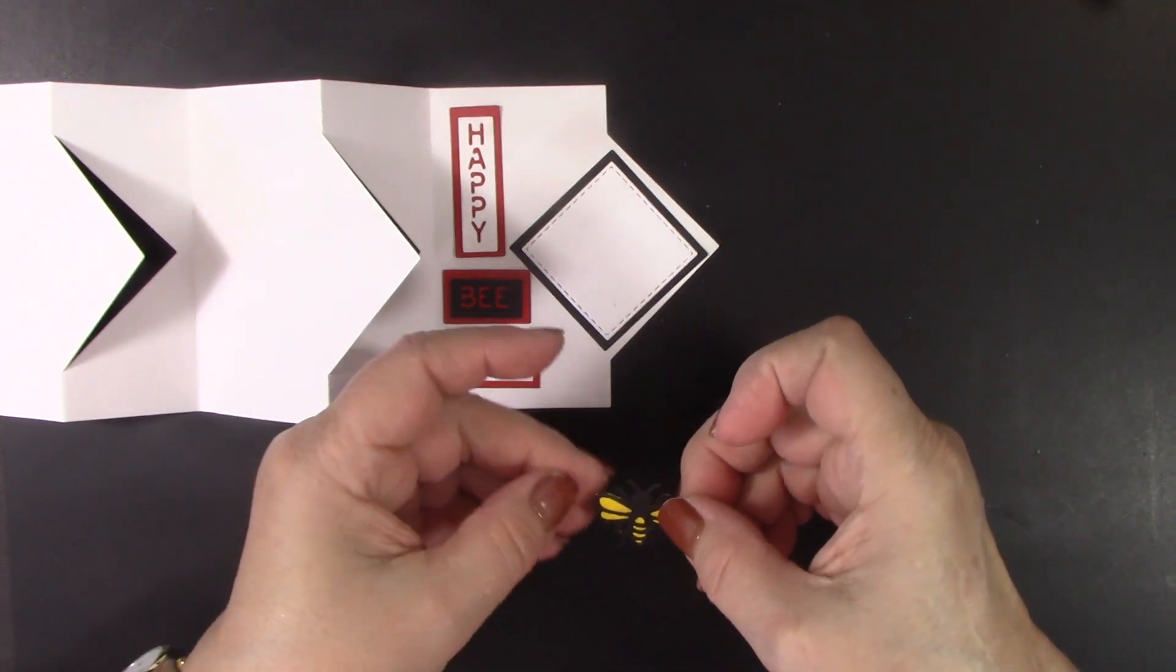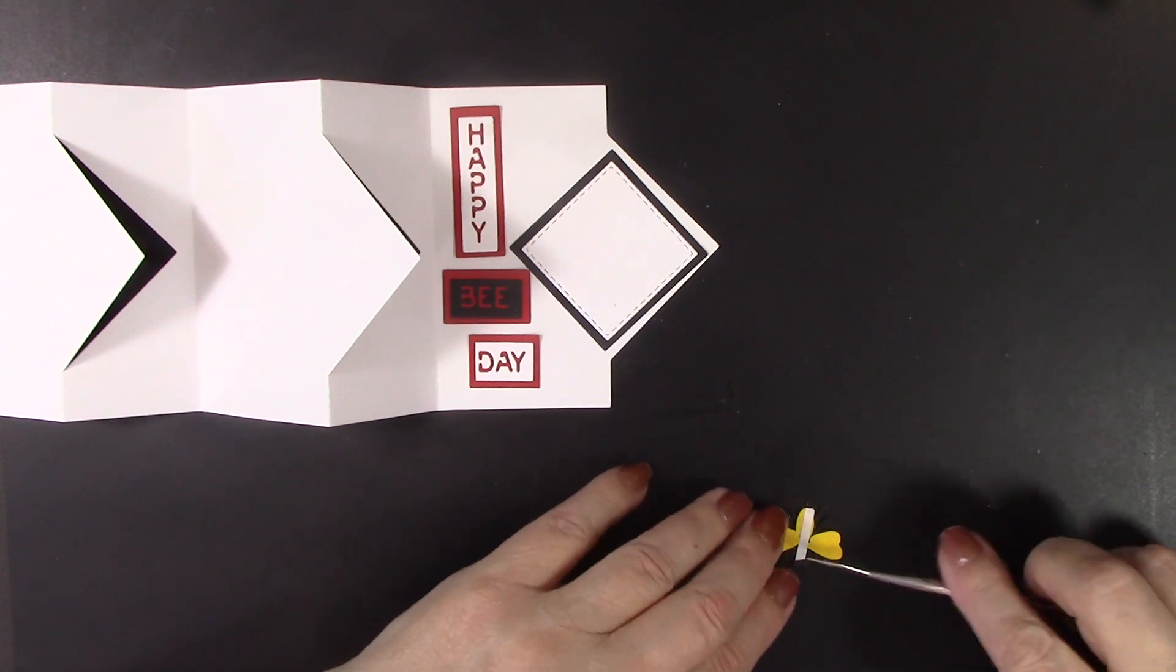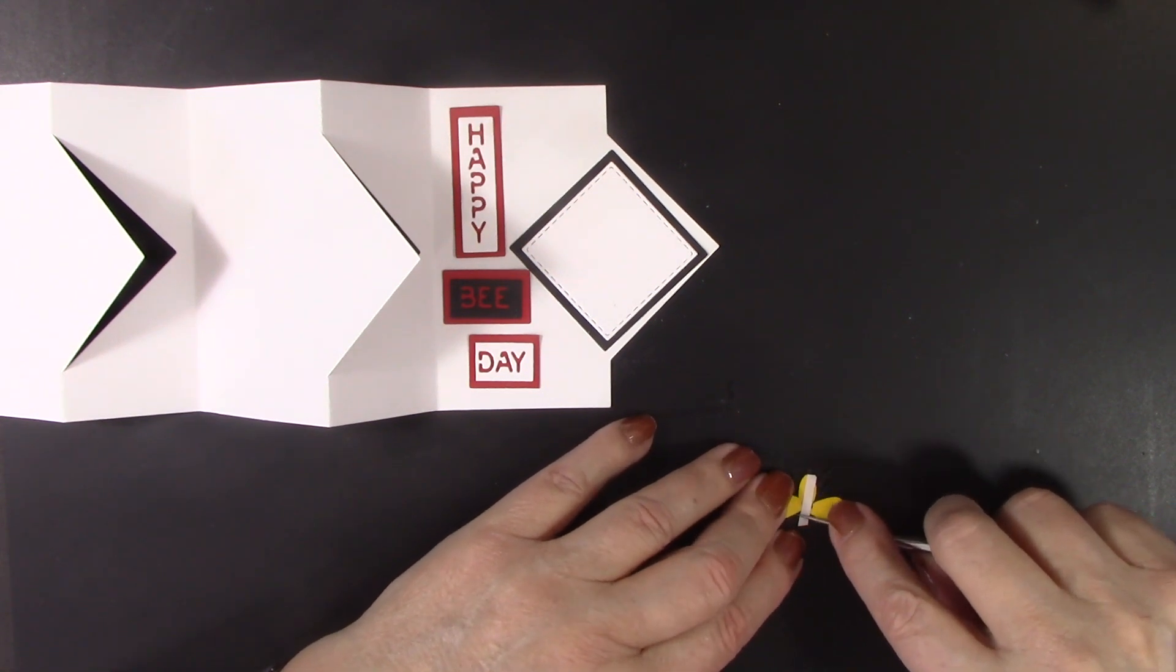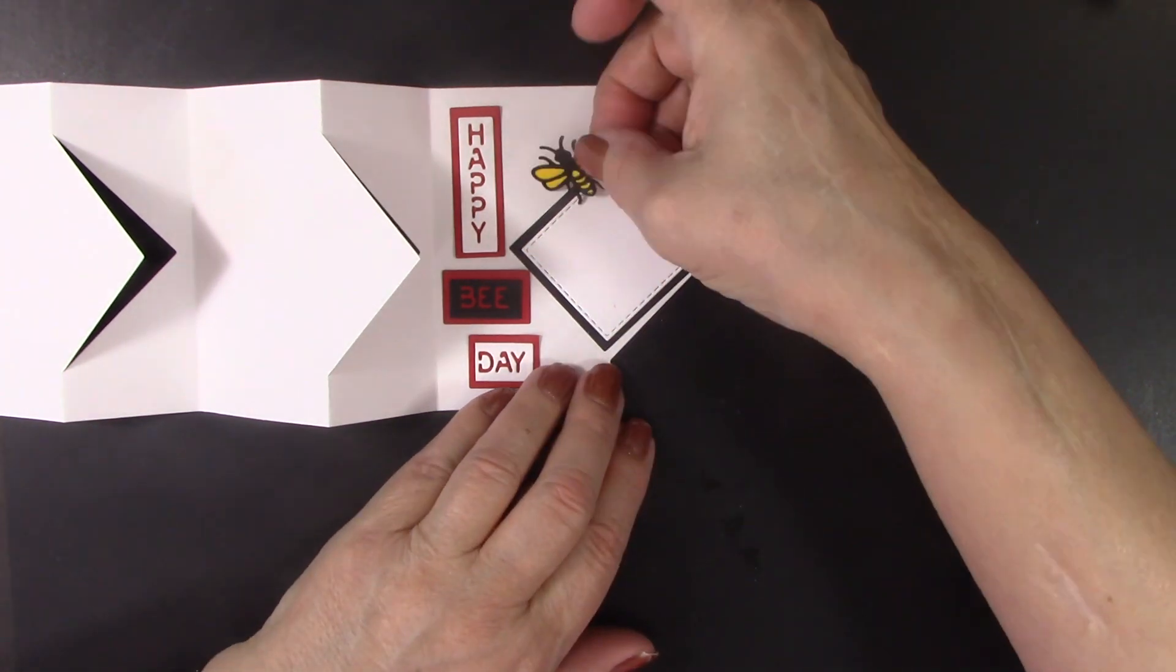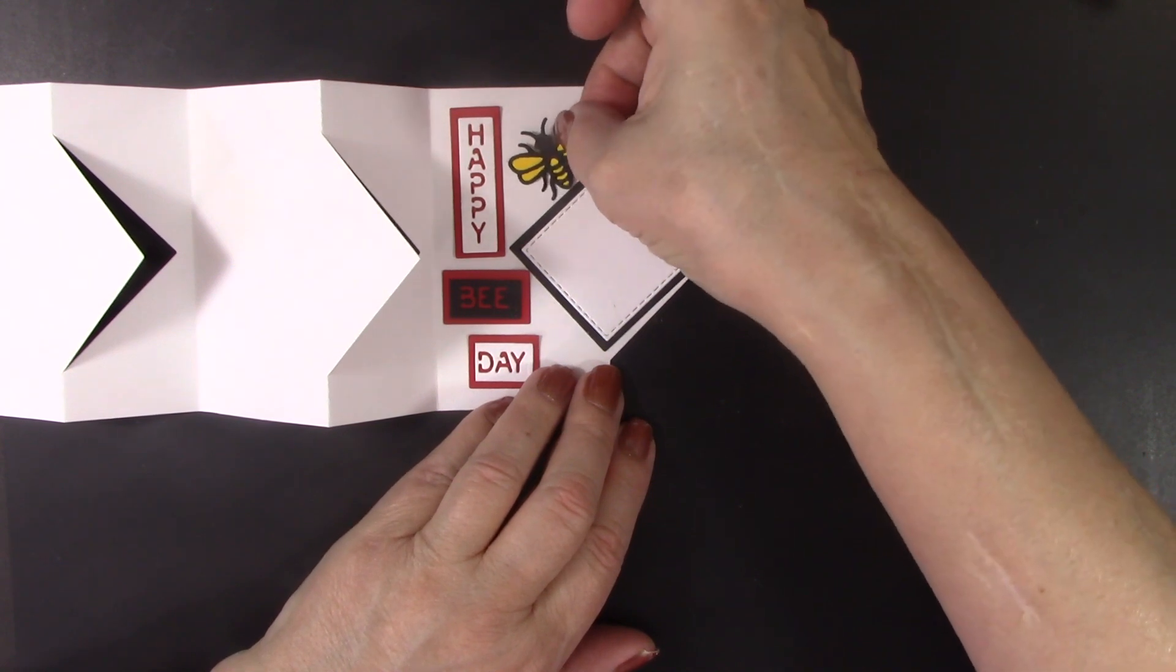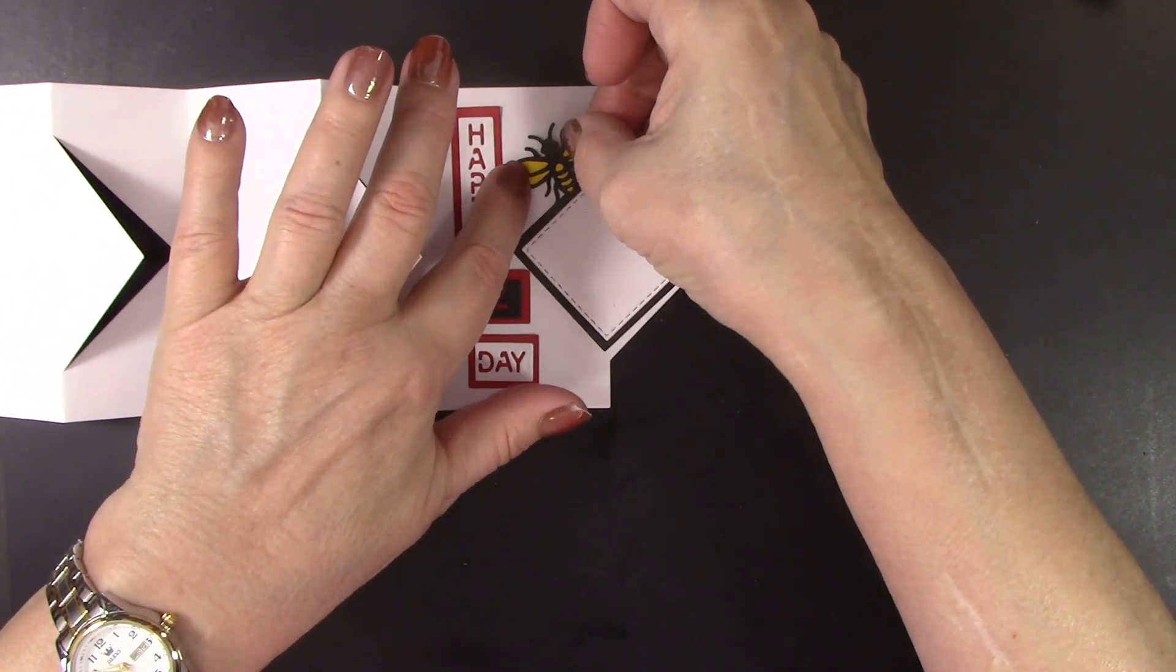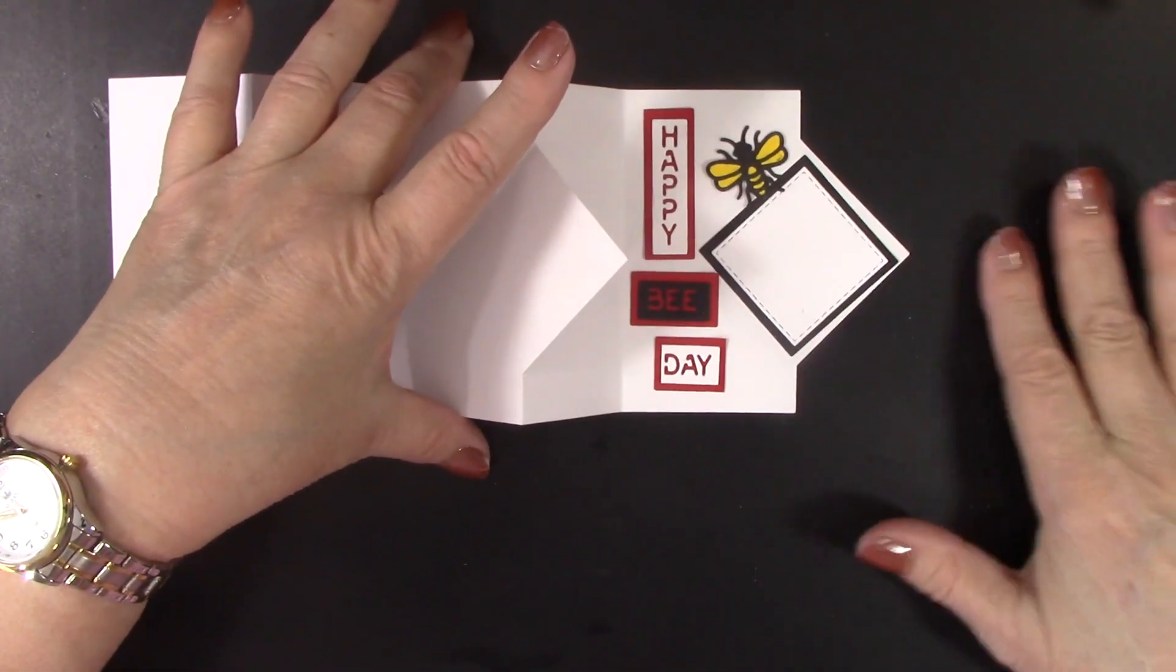Happy Bee Day. And then I have one of the smaller bees. And I just put some two-sided tape strips on these, so I don't have to wait for the glue to set up. And of course, you can attach it any way you want. We'll, what do you think? This way? I think I'll go that way. Alright, so our third layer is ready.